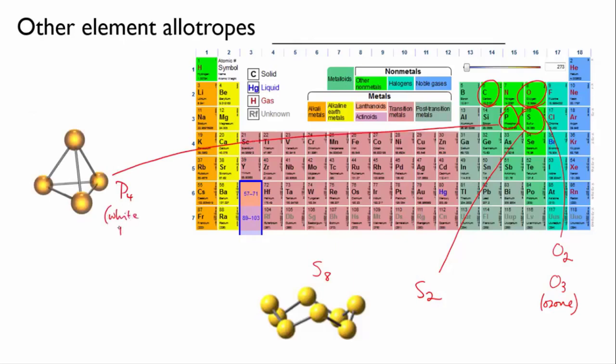Compare this with the tetrahedron of methane, which has the central carbon atom, which then has the bonds radiating out to the four hydrogens, which form the vertices of the tetrahedron. In this one, the phosphorus atoms are at the vertices and the bonds actually form the sides of the tetrahedron.